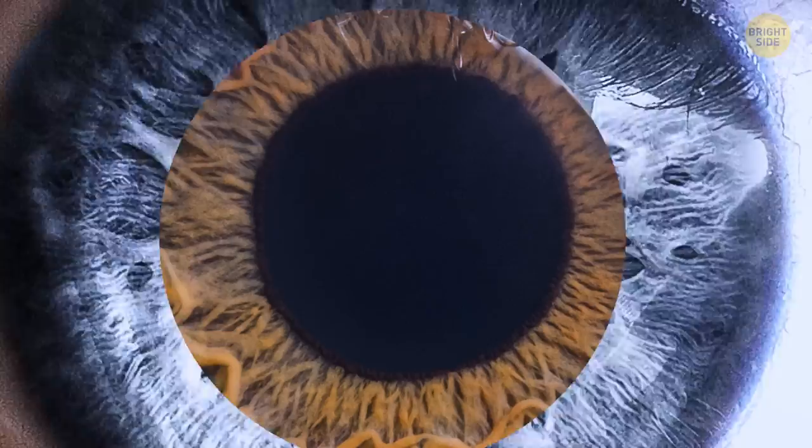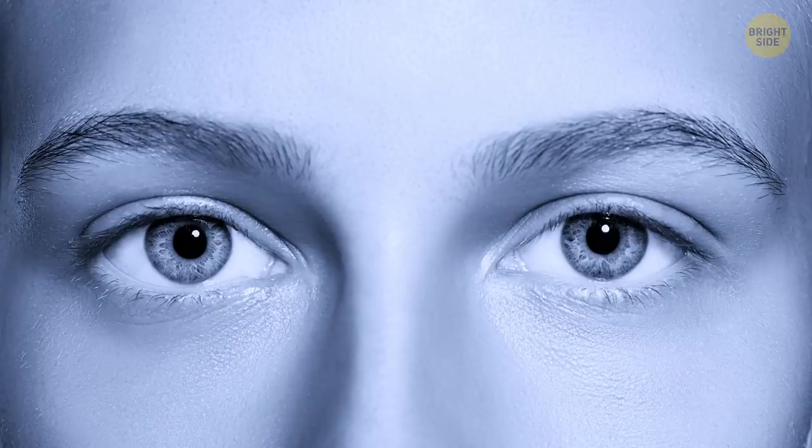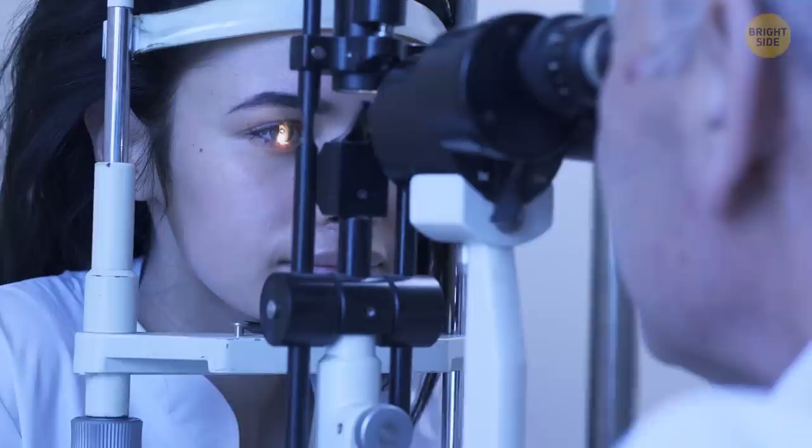This rare body feature is caused by a lower level of melanin in the eye's layers. If you're interested in meeting someone with gray eyes, your best chance is in Eastern and Northern Europe. Even rarer eye colors are red or violet, but these can sometimes be the result of different health conditions.